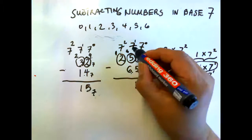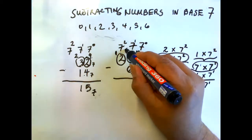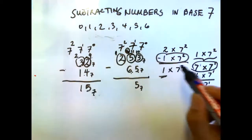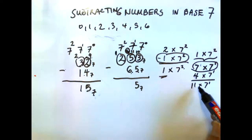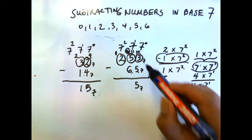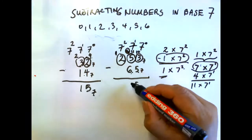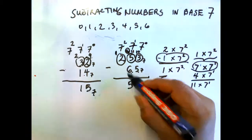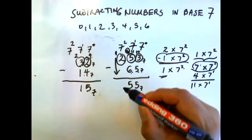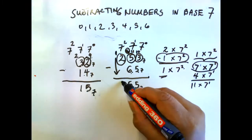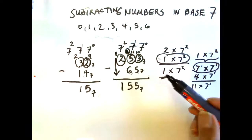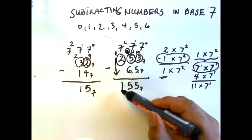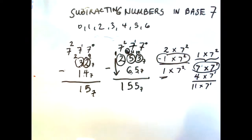So four plus seven becomes eleven groups of seven to the power of one. Eleven less six is five. We bring down the remaining one. So our answer to the whole question is one five five in base 7.